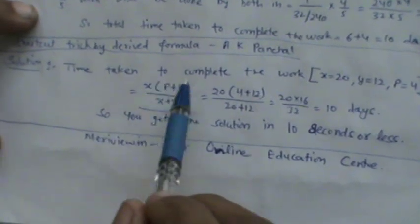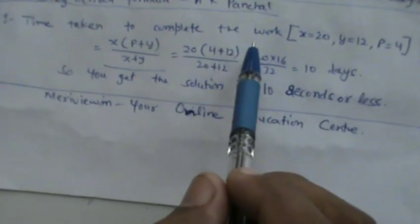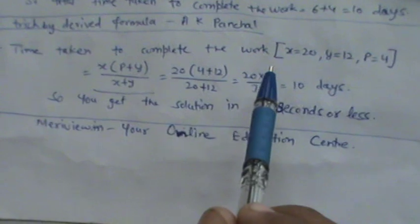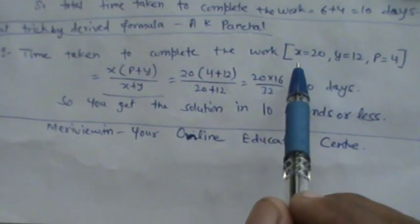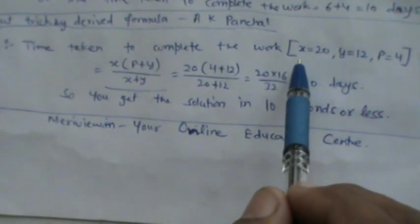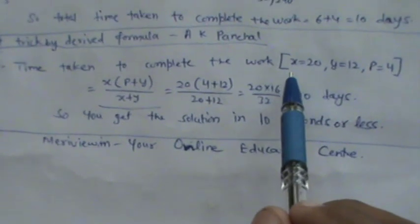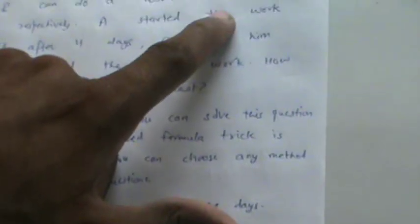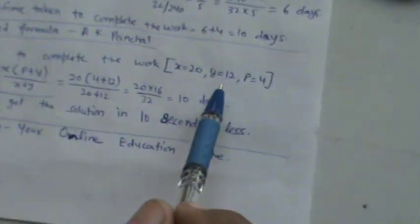The time taken to complete the work, we first make the terms. So the terms are: x is equal to 20 days, the work done by A in 20 days. x is equal to 20, y is equal to 12, the work done by B. And P is the days before B joined.